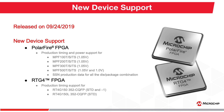In the PolarFire family, we are supporting production timing and power for all PolarFire devices with a core voltage of 1.05 volts. In addition, we are supporting production timing and power for MPF500T S&T devices with a core voltage of 1 volt. With the release of Libero SoC version 12.2, we now support production data for simultaneous switching noise, or SSN, for all PolarFire devices.